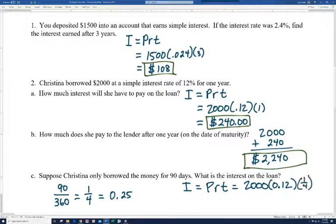And so our time in years is one-fourth or .25. Now I'm going to go ahead and put one-fourth in here, and I would encourage you to see if you can plug this expression into your calculator and get the answer directly. And you should get $60. So $60 to borrow $2,000 for 90 days. All right, let's move on to the next problem.